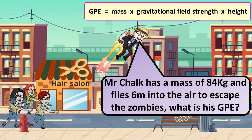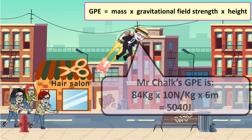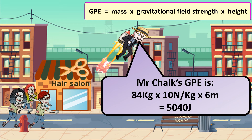Mr. Chalk has a mass of 84 kilograms and flies 6 meters into the air to escape some zombies. What is his GPE? That would be 84 times 10 times 6, which equals 5,040 joules.